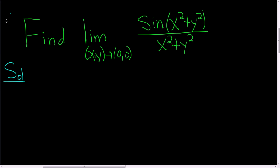In this video, we're going to find a limit by using polar coordinates. So recall that in the polar coordinate system, x is equal to r cosine theta, y is equal to r sine theta, and r squared is equal to x squared plus y squared.